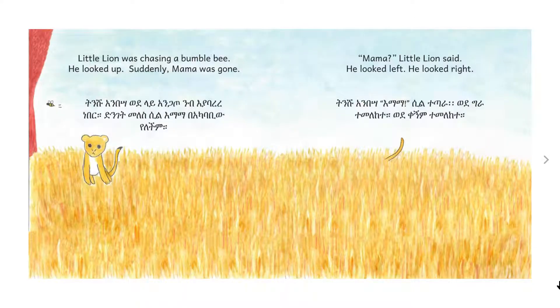Little Lion was chasing a bumblebee. He looked up. Suddenly, Mama was gone. Mama, Little Lion said. He looked left, he looked right.